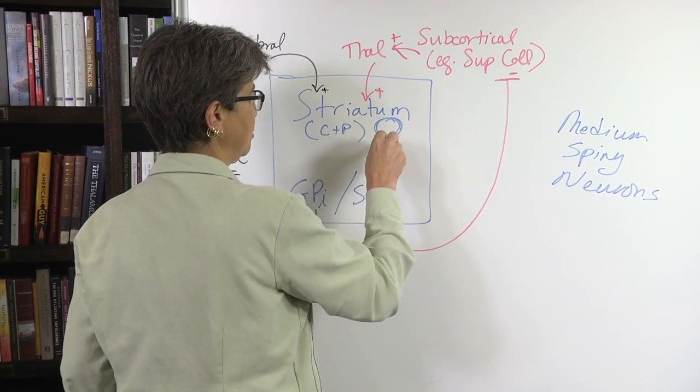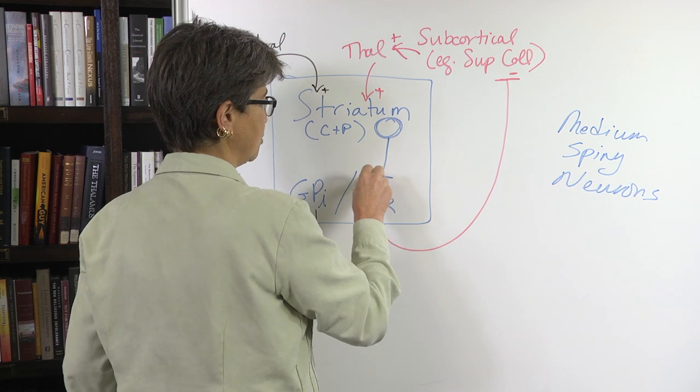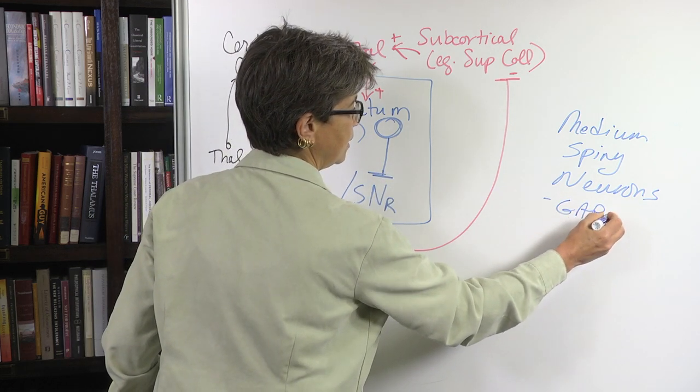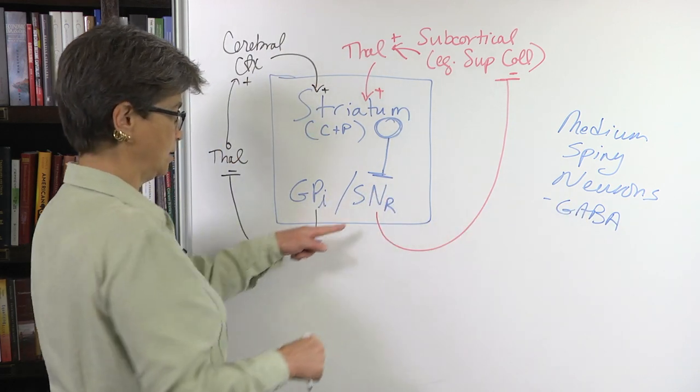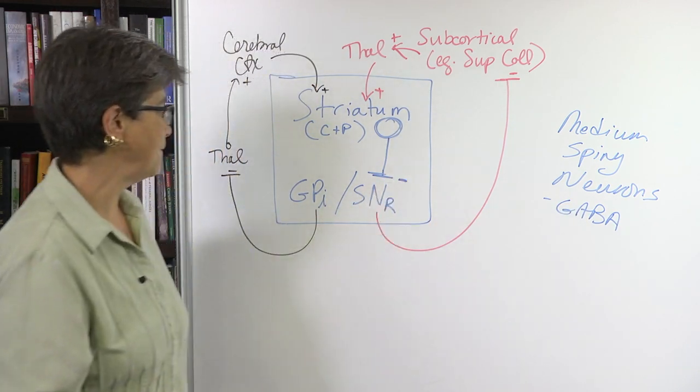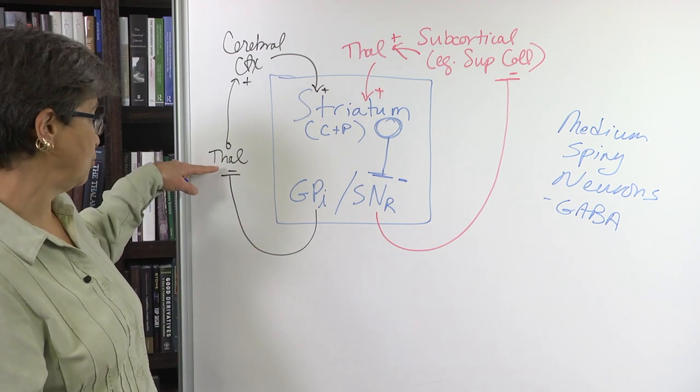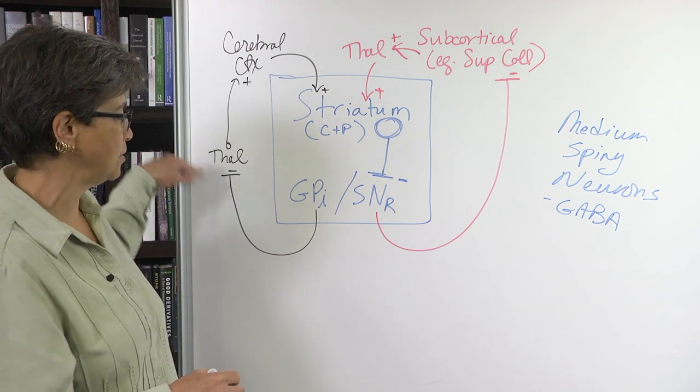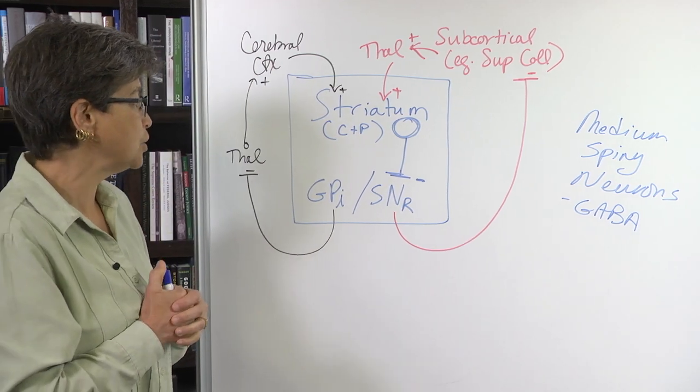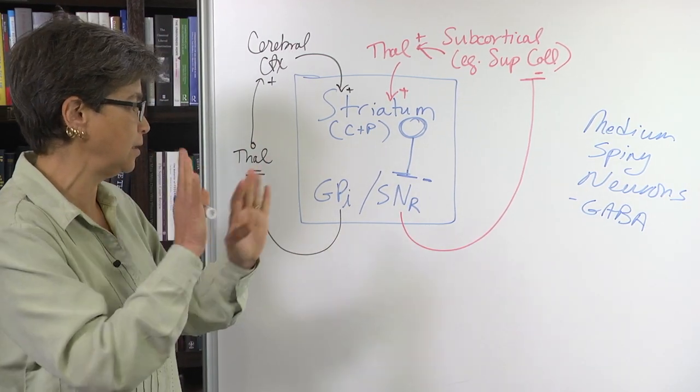These medium spiny neurons inhibit - they're GABAergic, they contain GABA - and they inhibit the cells in the output nucleus. The cells in the output nucleus inhibit the thalamus. So this is a basic disinhibitory circuit, which we will examine in great detail.